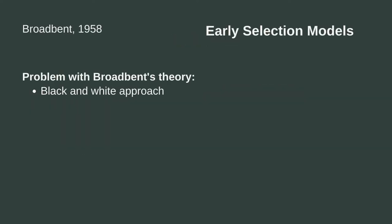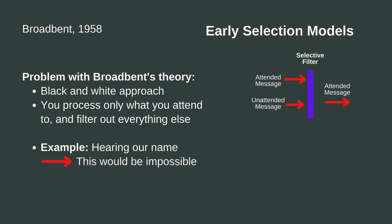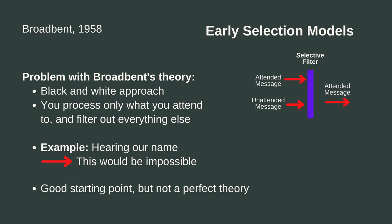One problem with this model is that it takes a black and white approach to processing. It argues that you process the things you pay attention to and ignore everything else. However, as most of you likely have experienced, sometimes we can be paying attention to a conversation at the cocktail party when suddenly someone behind us calls our name. Upon hearing our name, we immediately shift our attention away from the conversation to that person. According to Broadbent's model, this would be impossible because someone mentioning your name would not be something you paid attention to in advance, and therefore would have been filtered out and ignored. Thus, although this model is a good starting point, it is not perfect.